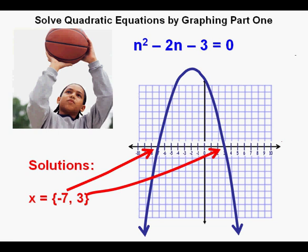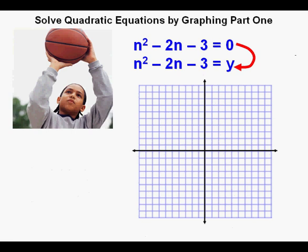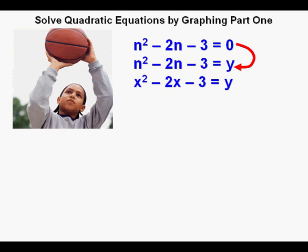Now, back to our problem. In order to graph on a coordinate plane, Joe will need to change this quadratic equation into a quadratic function. The first thing he does is change the 0 on the right side to a y. The next step is to convert the n's to x's so it's graphable on an xy coordinate plane.